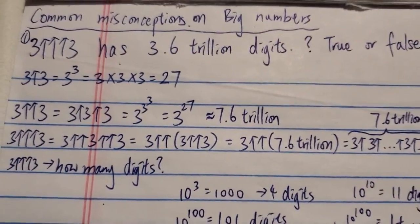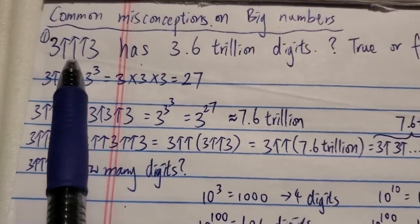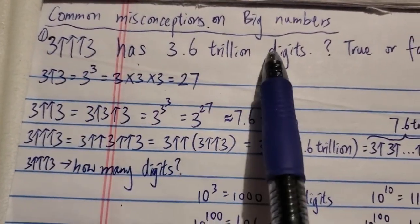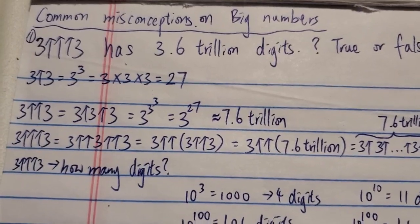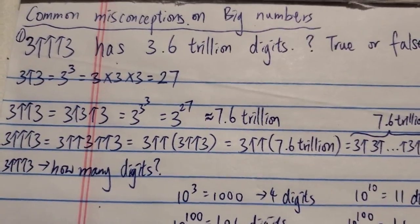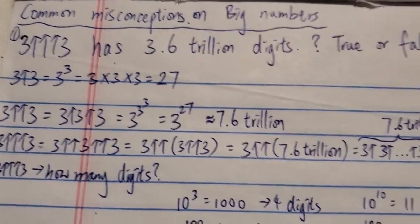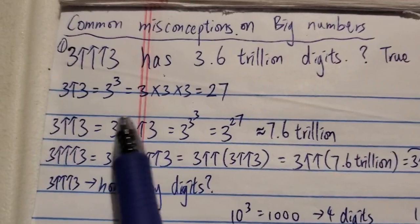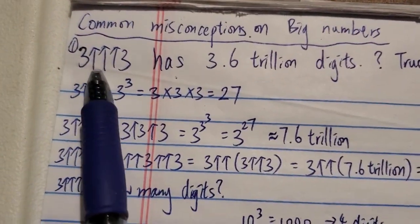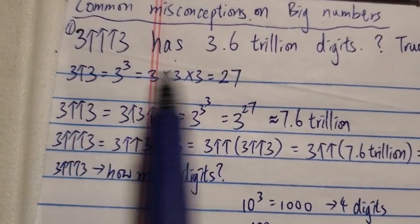That's what caused this misconception, and a lot of people spread this false information after that video. So that's why many people still believe this number has that many digits. But is it true? Of course it's not true — otherwise I wouldn't be making this video. So how many digits does 3↑↑↑3 actually have?